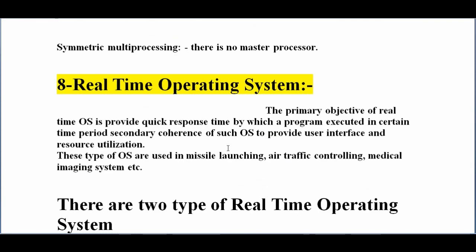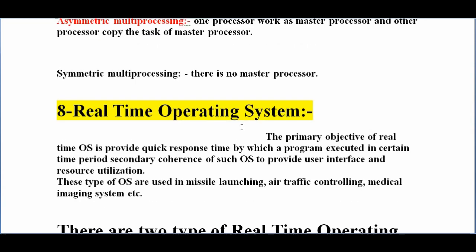Another operating system is real time operating system. The primary objective of a real time operating system is to provide quick response time, by which a program executes within a certain time period. The secondary concern is to provide user interface and resource utilization. This type of operating system is used in missile launching, air traffic controlling, and medical imaging systems.